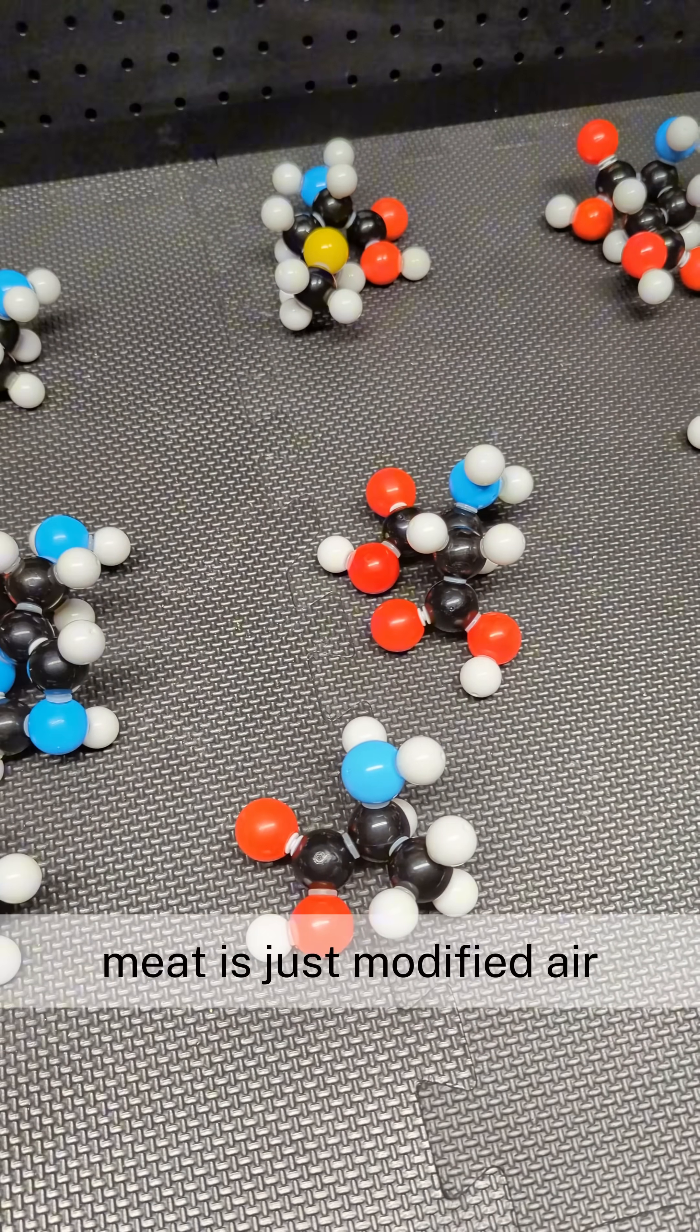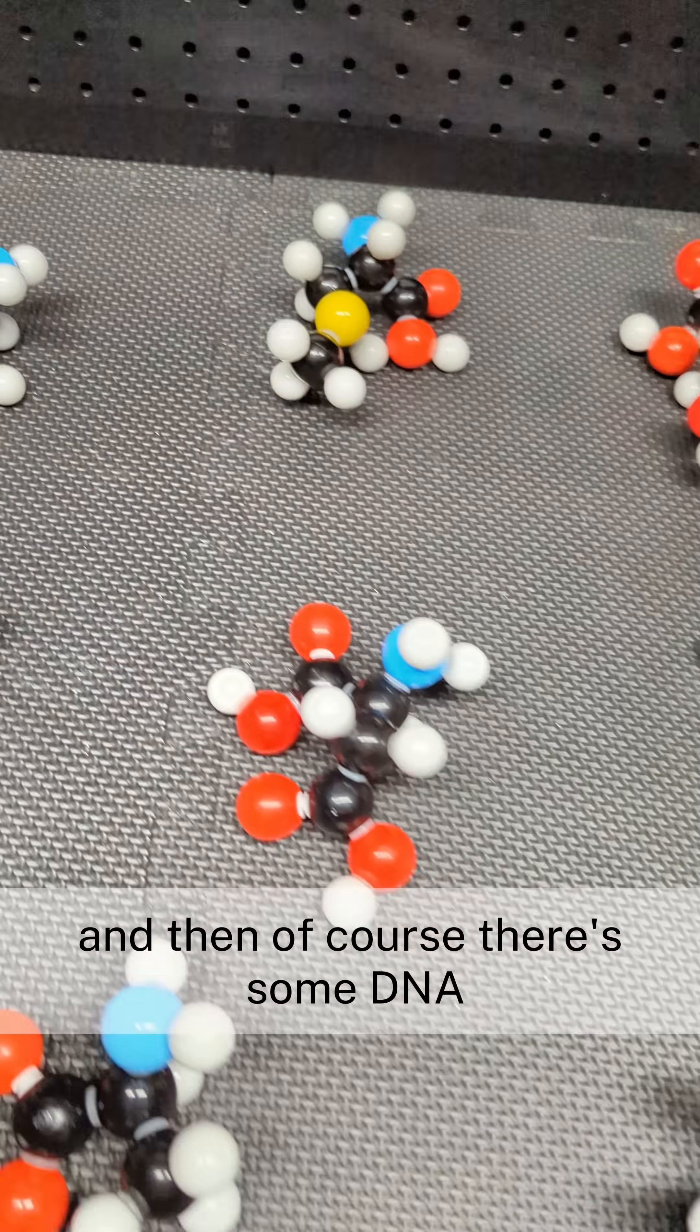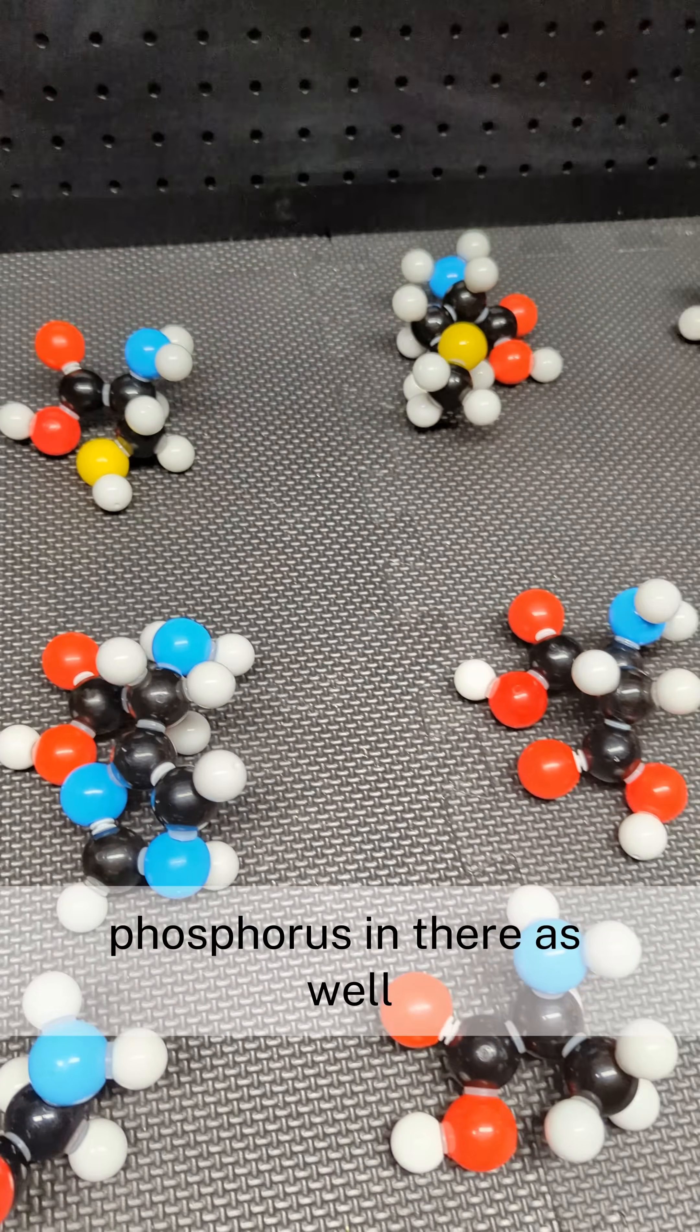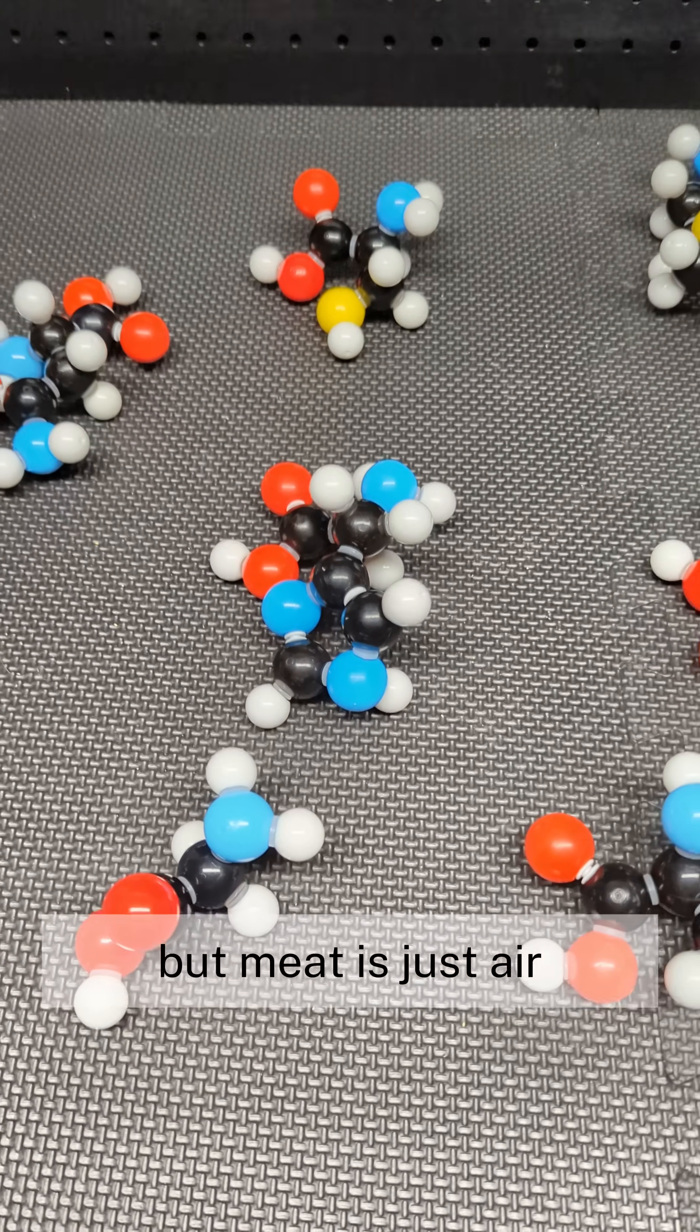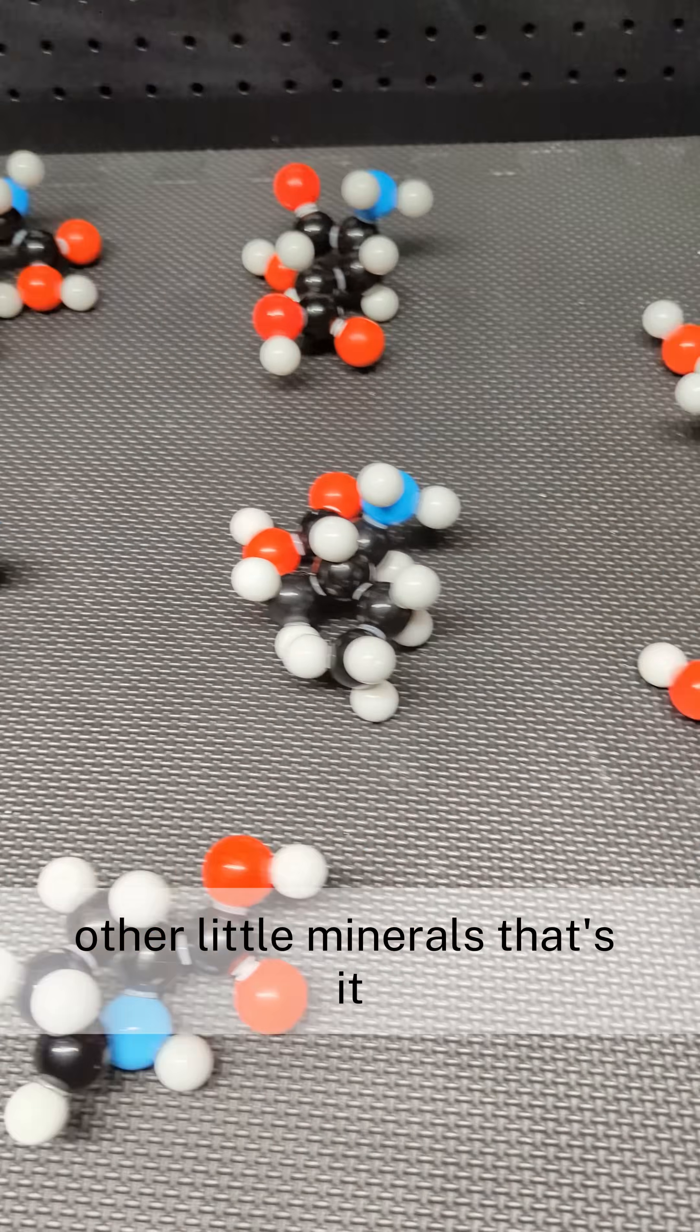Meat is just modified air, plus sulfur. There's a little bit of sulfur in there. And then, of course, there's some DNA, there's some ATP. So you've got some phosphorus in there as well. But meat is just air and a slight pinch of minerals, other little minerals. That's it.